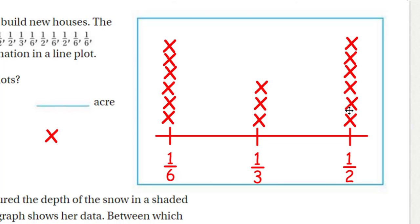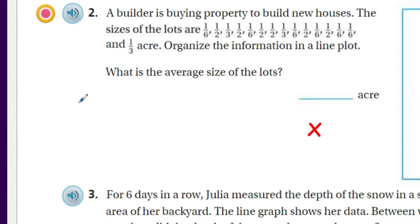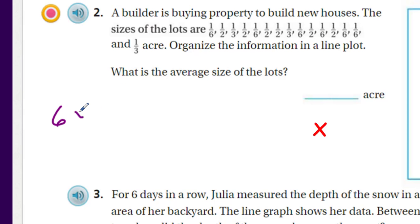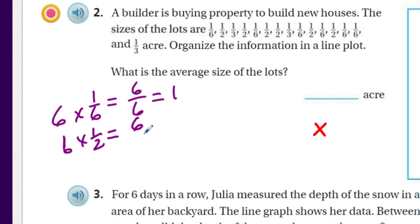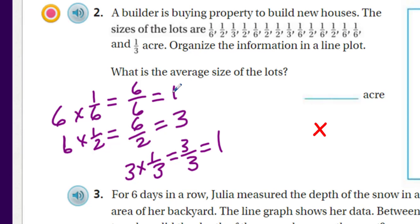Here's a shortcut: the six one-sixth values exactly equal the six one-half values on the other side, so they cancel out, making one-third the average — and that makes sense because they're exactly the same on either side. But let's go ahead and solve it properly. For six one-sixths: six times one-sixth equals six-sixths, which equals one whole. For six one-halves: six times one-half equals six-halves, which equals three. For three one-thirds: three copies of one-third equals three-thirds, which is another one whole.